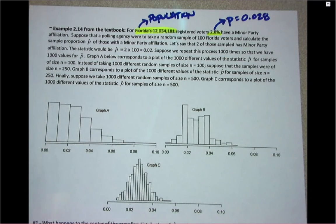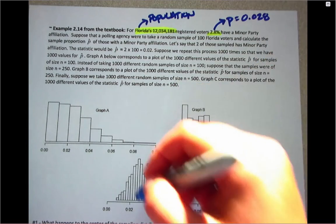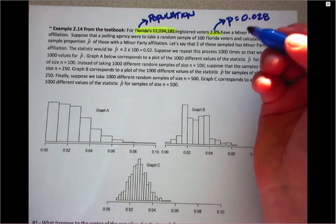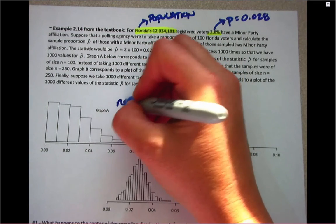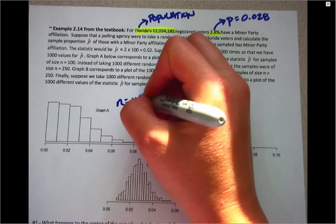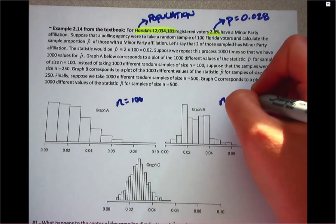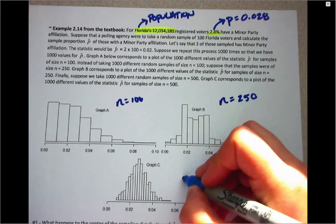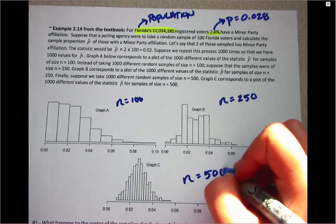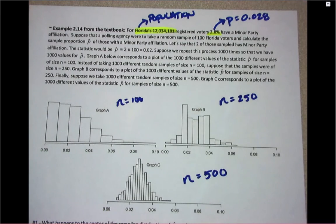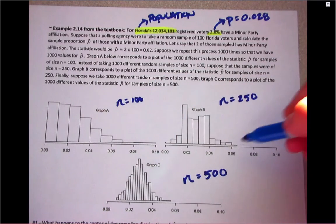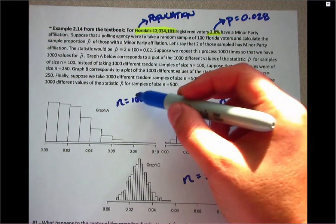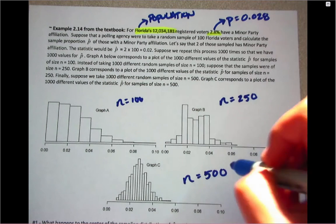What we want to look at today is three different sampling distributions when three different sample sizes have been taken. For graph A, we have samples of size 100. For graph B, samples of size 250. And for graph C, samples of size 500. These graphs are all made up of 1,000 different samples, but the samples themselves are from 100, 250, and 500 people.